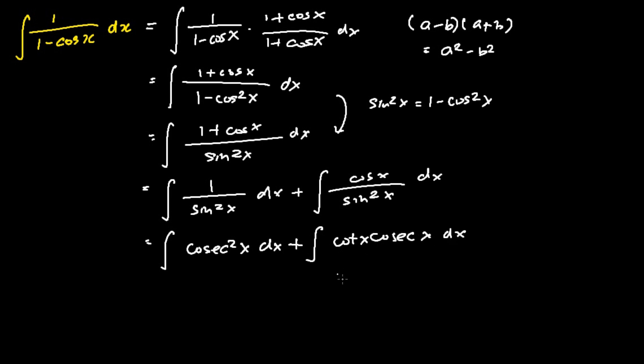How we do it is that cotangent x is made out of cosine x over sine x, and cosecant x is just basically 1 over sine x.